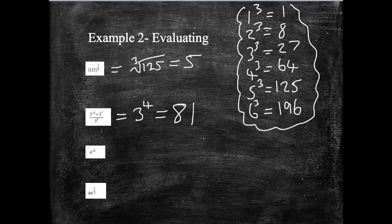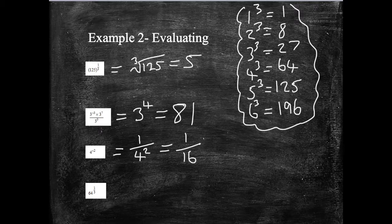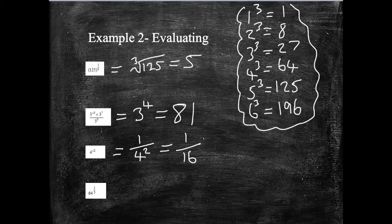Next one, 4 to the minus 2. Remember that minus means 1 over. So this is 1 over 4 squared. I know what 4 squared is. It's 4 times 4. So this is 1 over 16. Again, I've actually found a value. I can't simplify it anymore. It's as easy as it gets. And finally, again, a cubed root of 64. Looking at my list over here, we can see that that would be 4. Again, it's well worth knowing these to be able to do this sort of question.